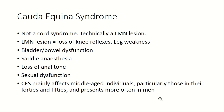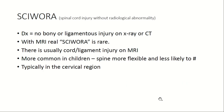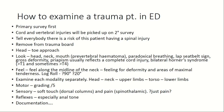SCIWORA — Spinal Cord Injury Without Radiological Abnormality — is seen most commonly in children under 8 years of age. Despite spinal cord injury, there is no abnormality on X-ray or CT scan because the spine in children is more flexible and less likely to fracture as bones are still growing. It typically presents as cervical injury in children.